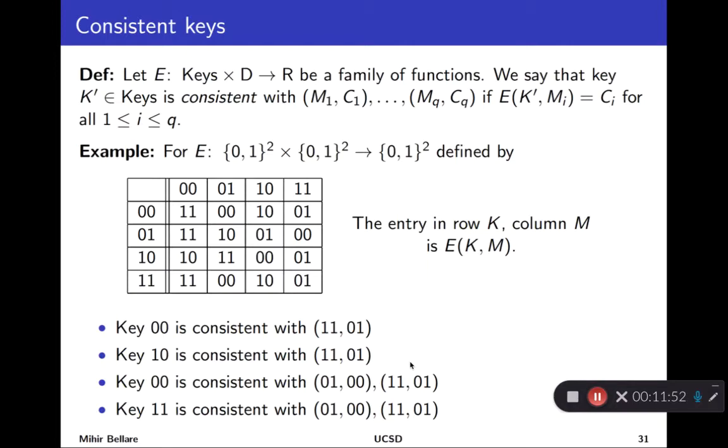But before we get there, let's finish this definitional quest by also giving the second definition. So security under recovery of consistent keys. Notice the element that we are going to be interested in here: in the prior game, the adversary won the prior game when it found the target key. It found the key that the game had picked, the key that was used by the FN procedure. We are now going to relax that. We're going to give the adversary more ways to win. Effectively, there could be other keys it finds, not the target one. And we will still say, fine, you won the game. And we're going to put some condition on the keys that defines what allows us to say that.